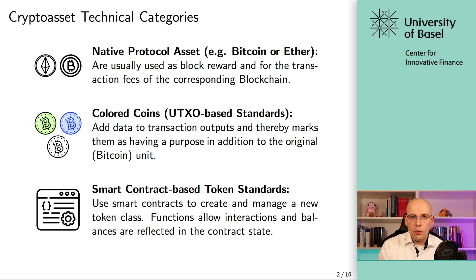Whenever you have a type of token — for example, the Crypto Lectures Coin (CLC) we will create later on — that CLC coin is managed by one smart contract. The token itself is essentially just a database on this smart contract: there are variables, a mapping that stores the balances for each individual owner, and that's it. That's really the idea: you implement a token in that way.